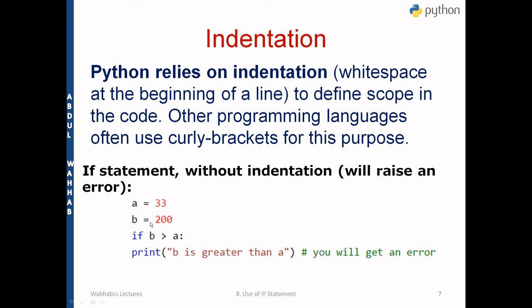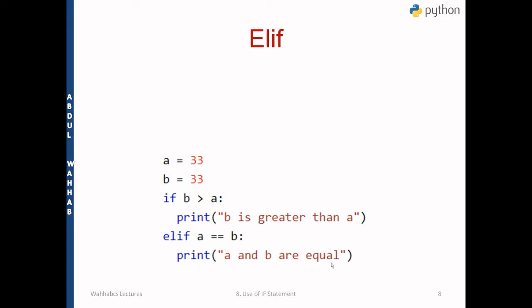Python relies on indentation — white spaces at the beginning of a line — to define the scope of code blocks. Other programming languages use curly braces for this purpose. An if statement without proper indentation will raise an error. In the previous example, 'print' had a gap before it because after the colon, Python expects the next statement to be indented. If you write the print statement without that indentation, it will give you an error.